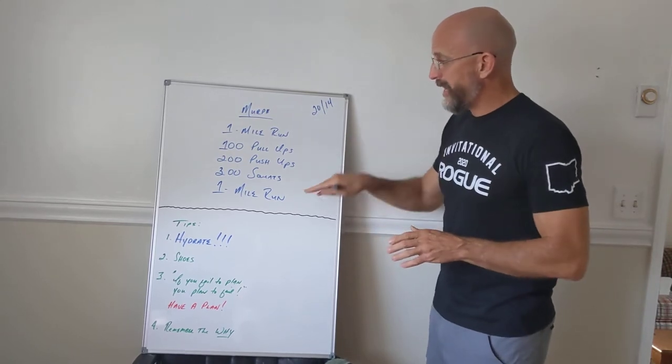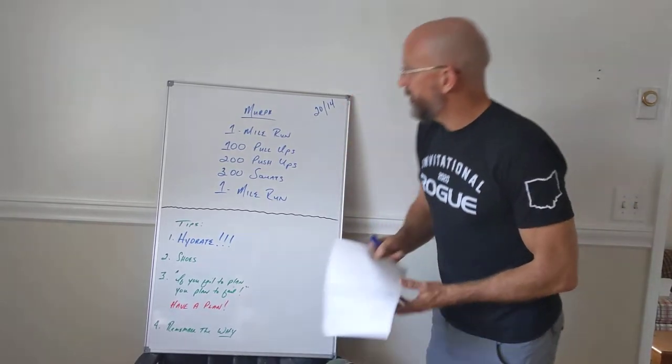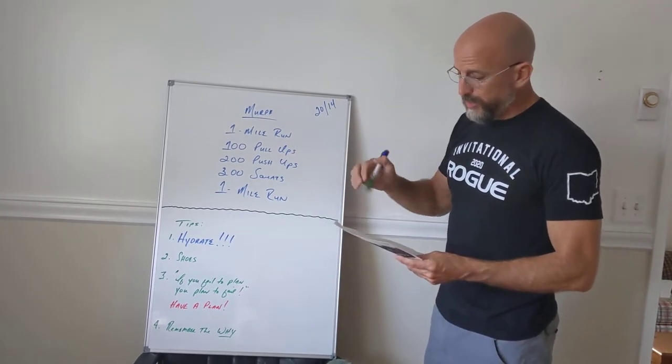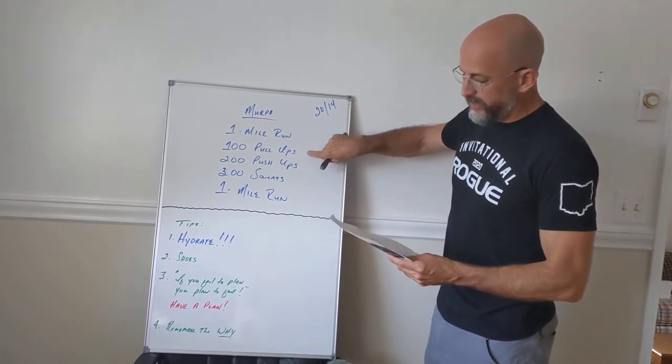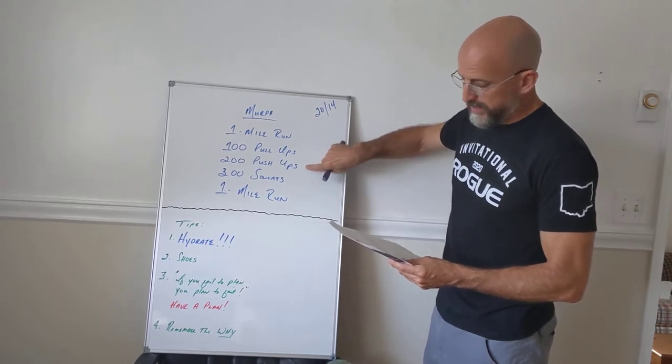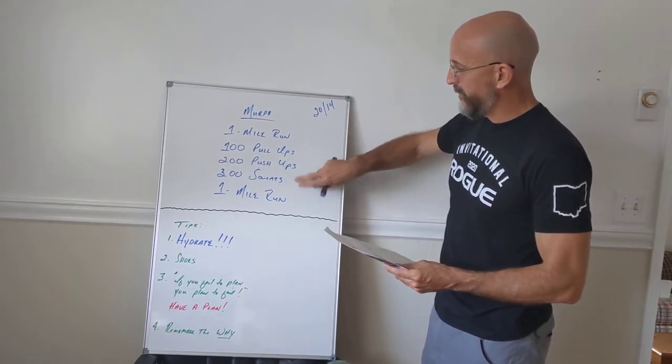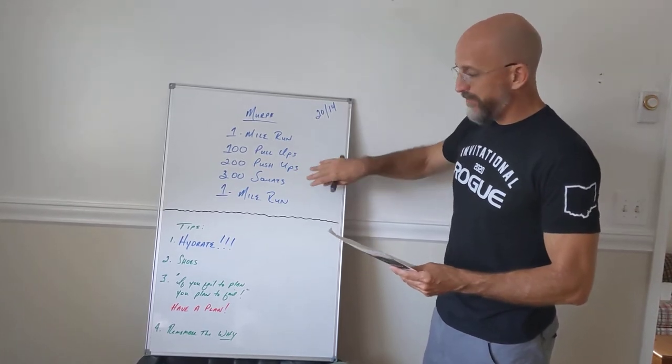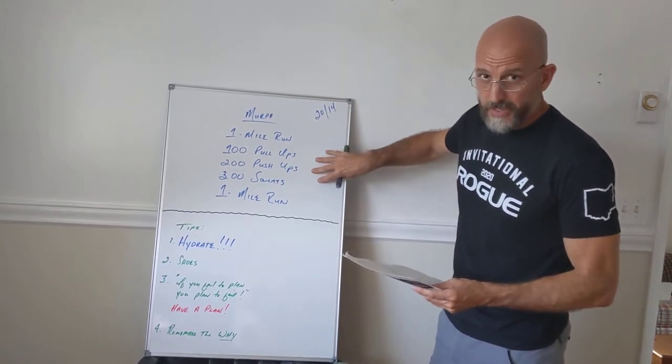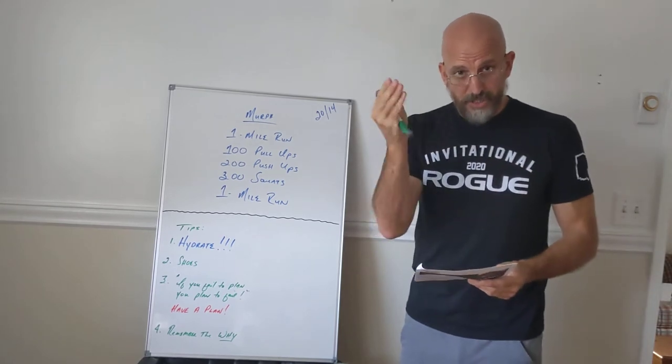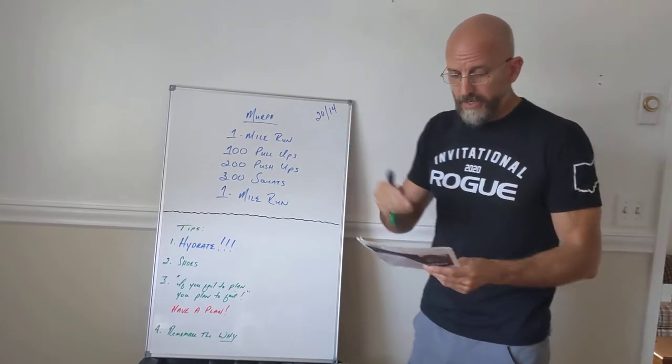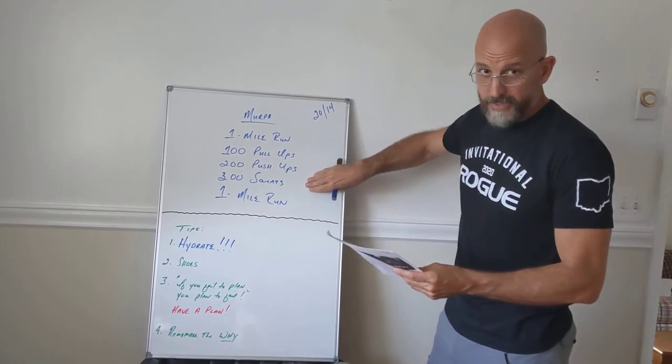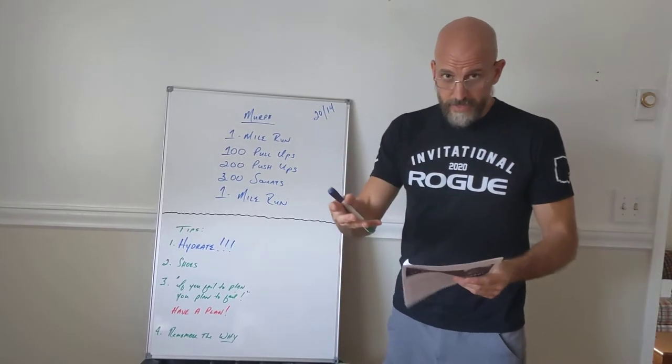You can cut the run in half. As far as your pull-ups, push-ups, and squats go, you could do two pull-ups, then four push-ups, and then six squats. And then go back and do two pull-ups, four push-ups, and six squats. Break it up. That would be 50 rounds, but it's small numbers. You're just chipping away at this workout. Another version would be five pull-ups, 10 push-ups, and then 15 squats. And you would do that for 20 rounds.